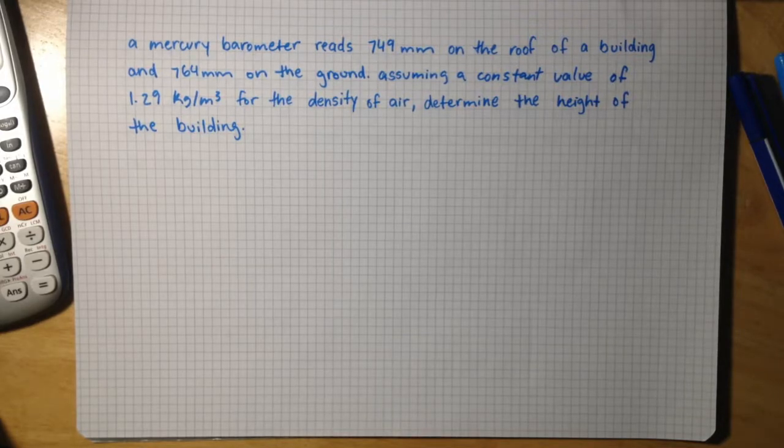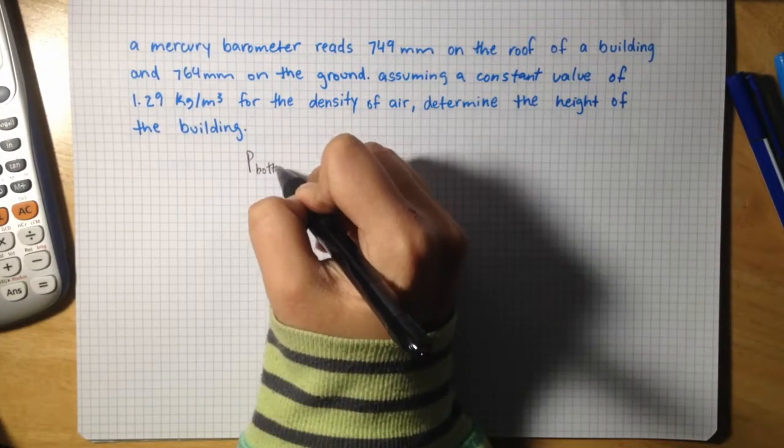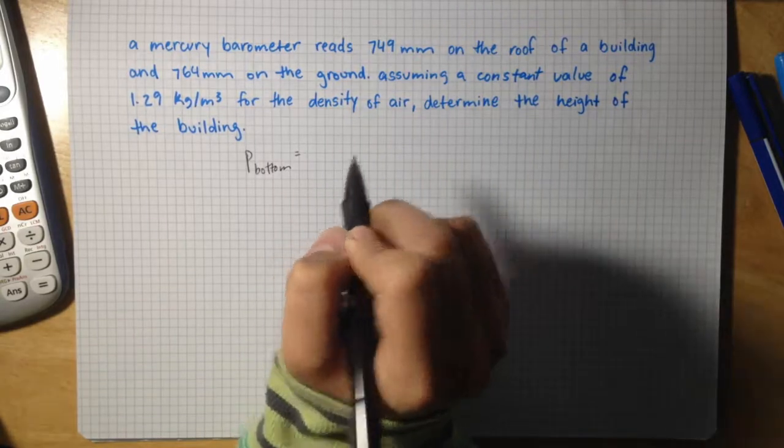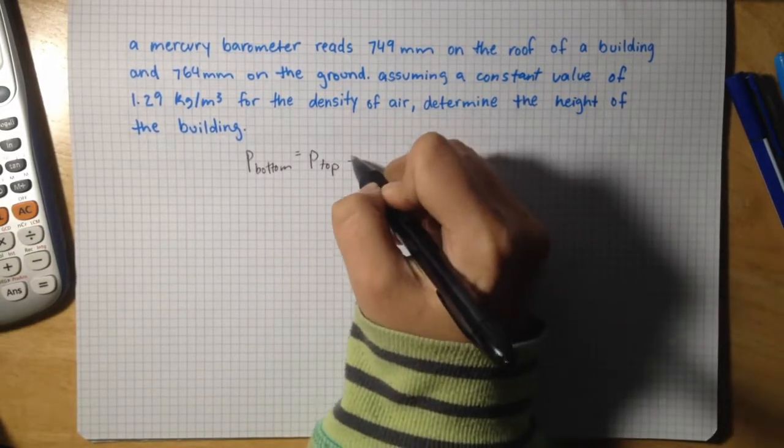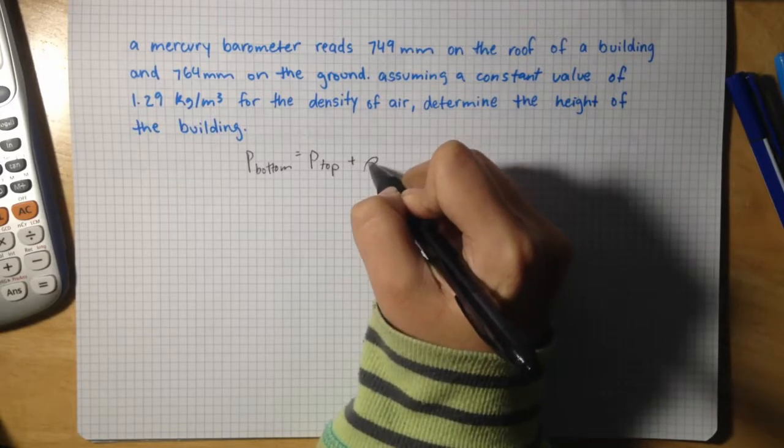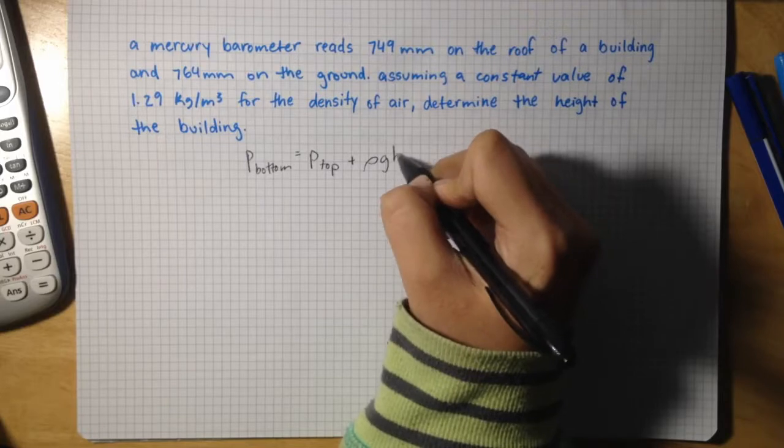We know that the pressure at the bottom of the building will equal the pressure at the top of the building plus the product of the density of air, gravity, and the height of the building.